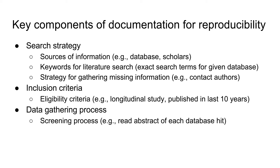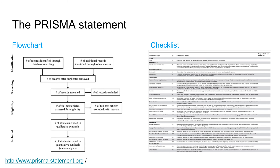Third, make your data gathering process explicit. You might have had a specific strategy to decide on eligibility, for instance to screen all abstracts that came up from your search. A flowchart of study inclusion and exclusion criteria, as well as a more extensive checklist of aspects to report over the course of a meta-analysis, can be found on the PRISMA website. Some of our other videos, e.g. on literature search, will explain in more detail how to keep the different parts of a meta-analysis reproducible.